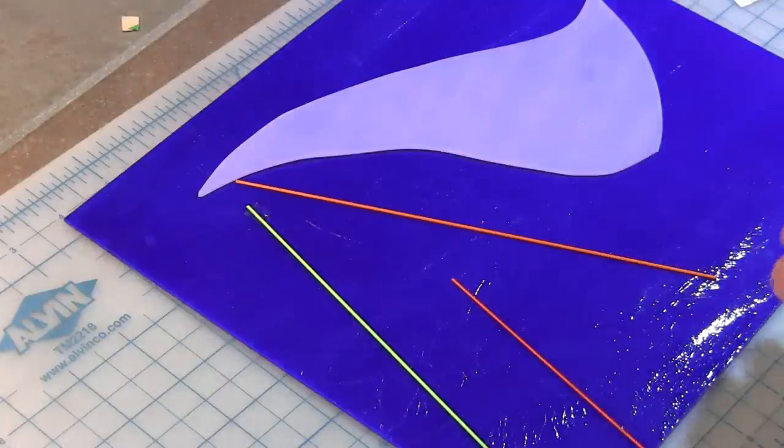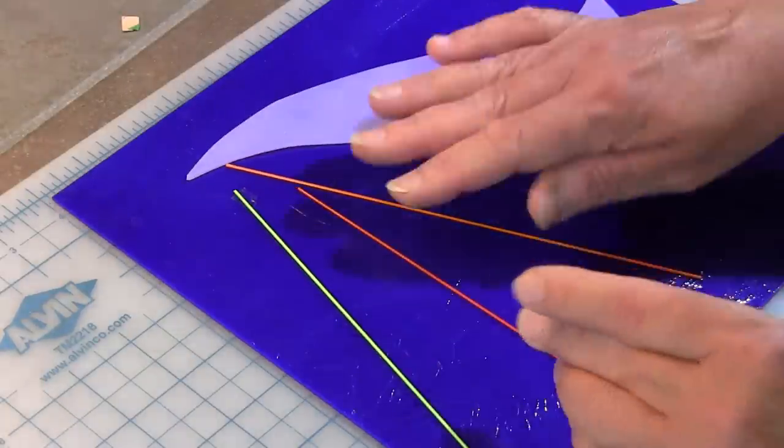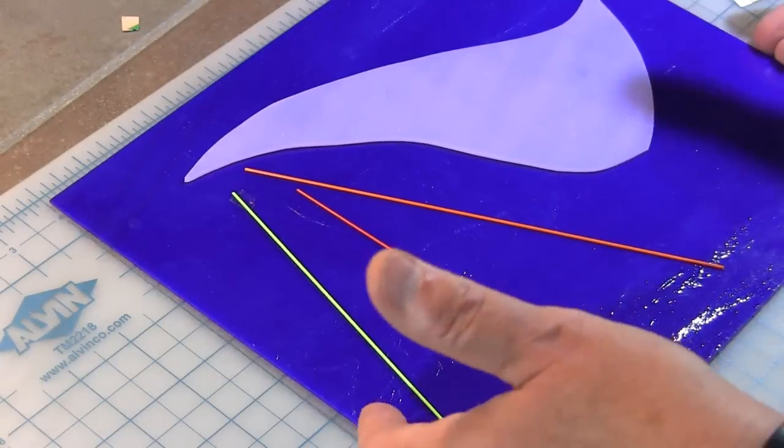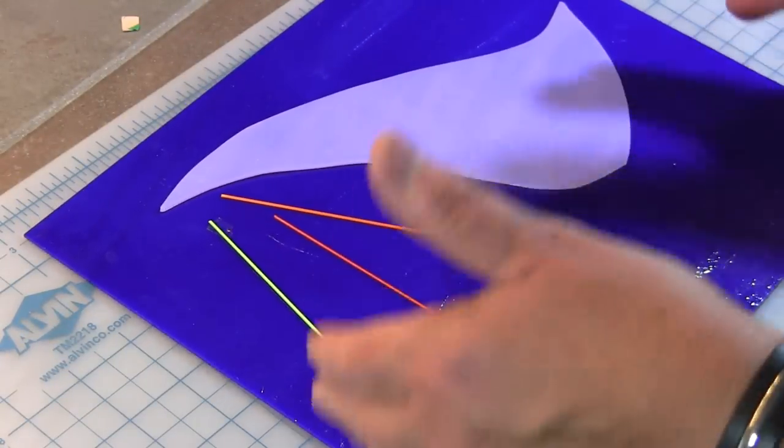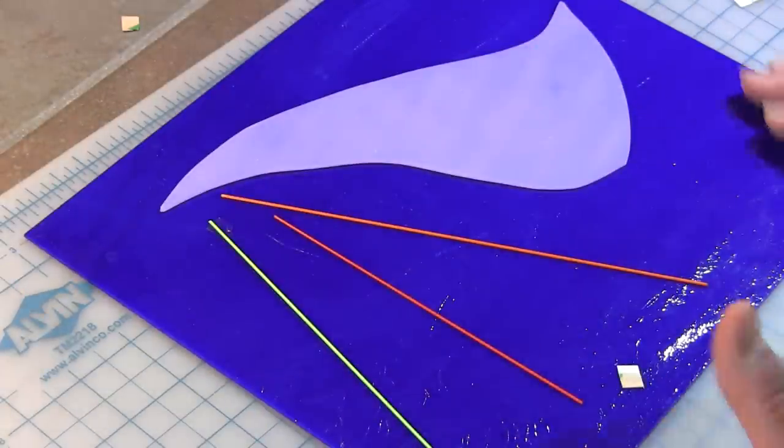And so you can use these tiny pieces of tape to position your stringers wherever you want, and then when you're ready and pleased with how it looks, you can carry it out to your kiln and not worry about it moving around.